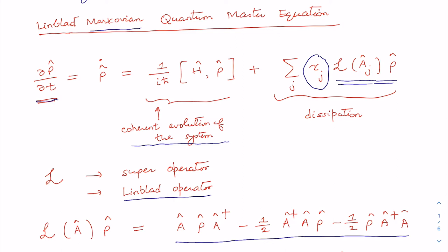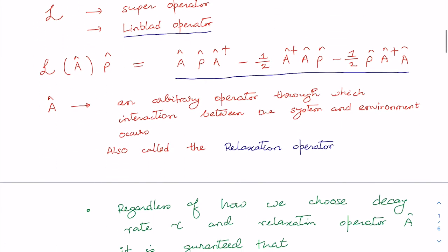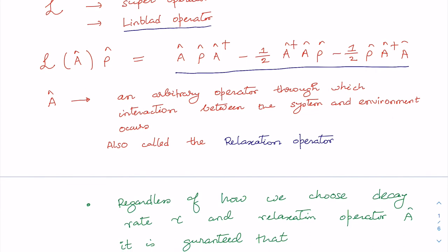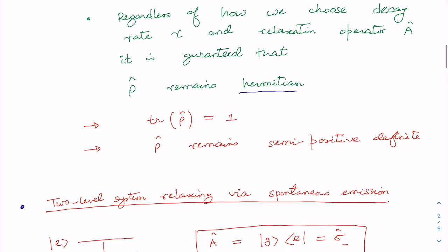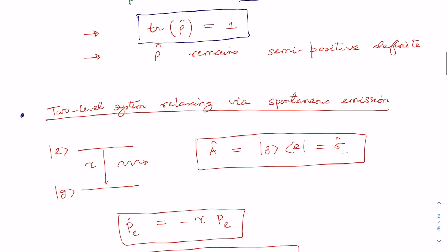In this equation, gamma refers to the relaxation decay rate. There may be many relaxation processes in a particular quantum system depending on the situation, so this sum takes all processes into account. Gamma_J refers to the decay rate corresponding to the relaxation operator A_J. This particular structure guarantees that the density operator remains Hermitian, trace of rho equals 1 so probability is conserved, and rho remains semi-positive definite.